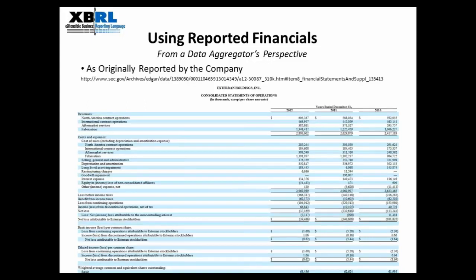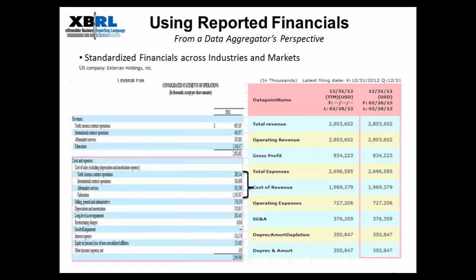From a data aggregator's perspective, here is how we approach financial data collection. We start with the financial report provided by the company. We capture information as originally reported by these companies, as this is useful to investors. Here you see a screenshot of the financial report by Exteran Holdings, Inc., their 2012 fiscal year annual report. We will actually capture this financial report as reported by the company.